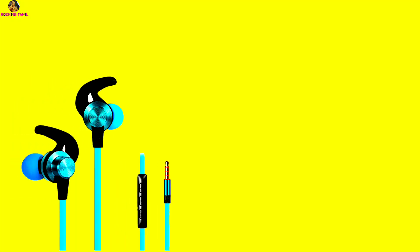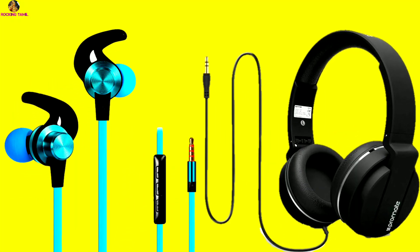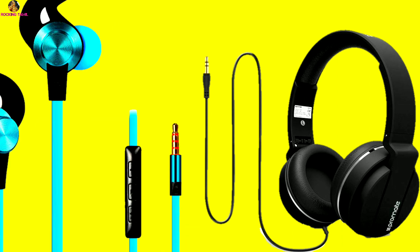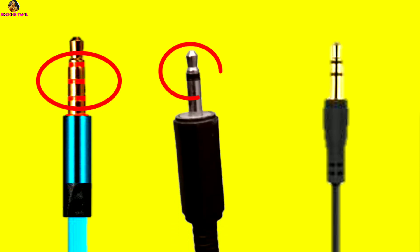Hi guys, today we have some useful information about earphones, headphones, microphones, and their connectors. In other situations, you can use 3 cut-down lines in your smartphone. But what do the cut-down lines mean in reality? Let me tell you in this video.